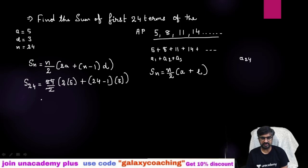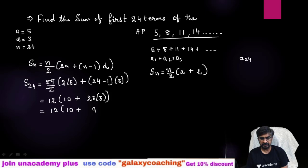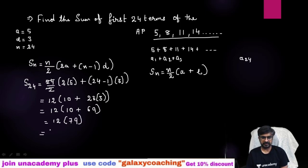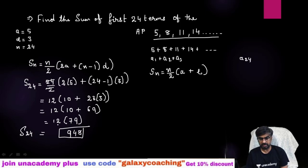Here 24/2 cancels to give 12. Then: 2×5 = 10, and 23×3 = 69. So 10 + 69 = 79. Now multiply: 12 × 79 = 948. So the sum of the first 24 terms of this AP will be 948.